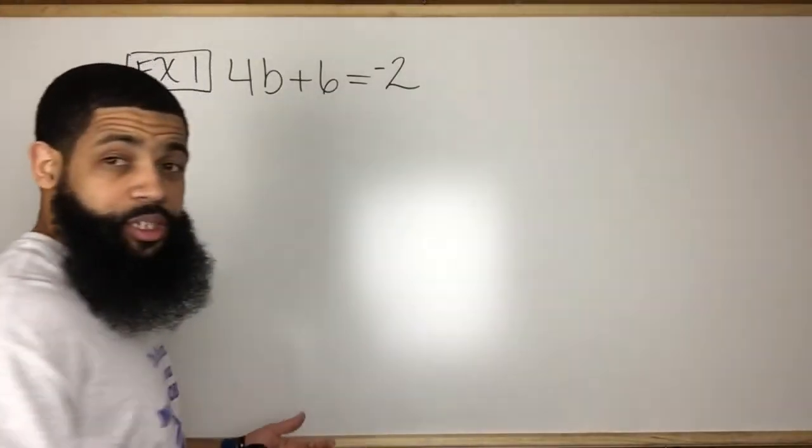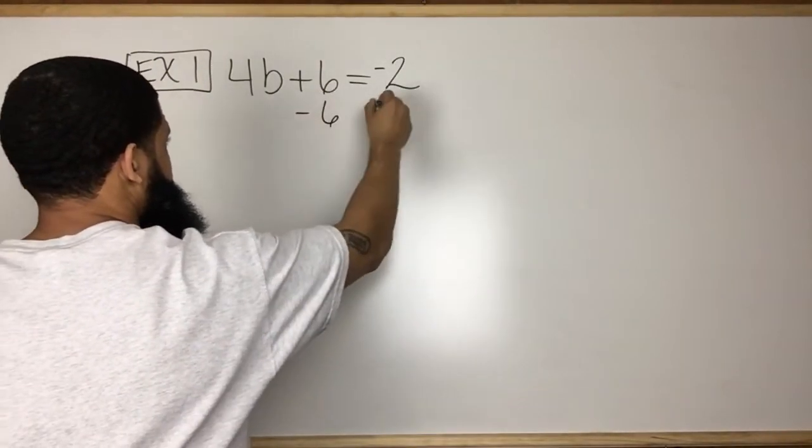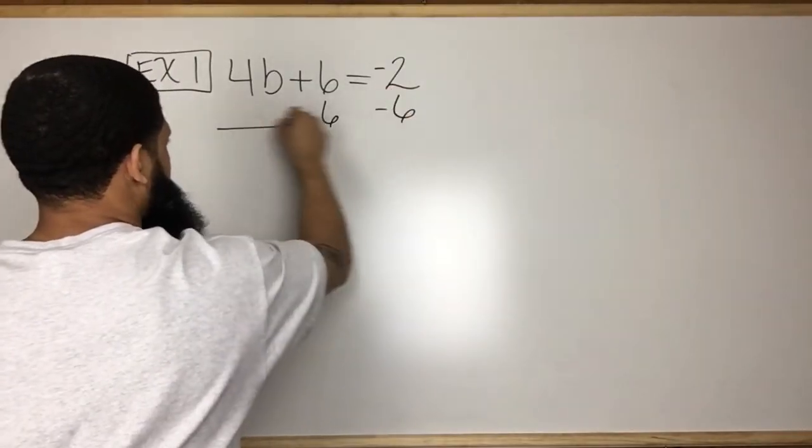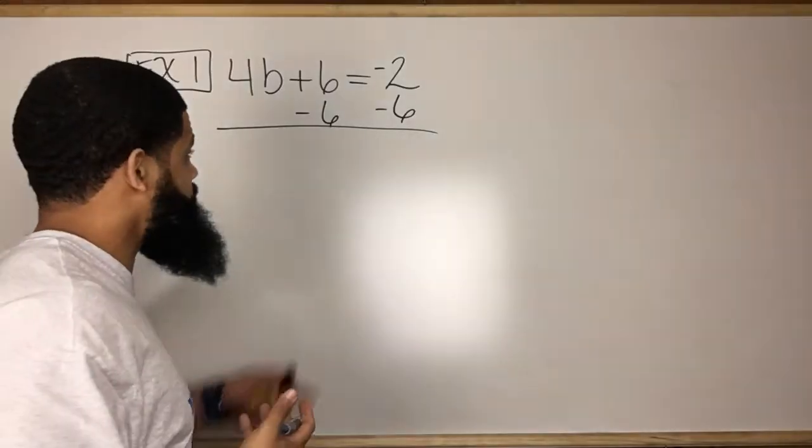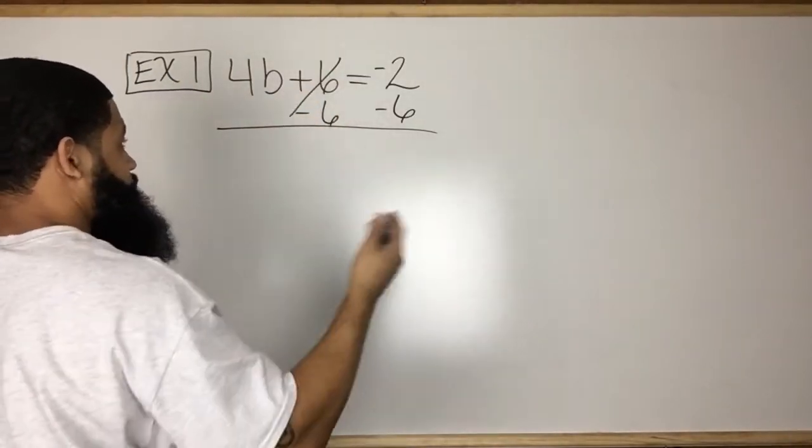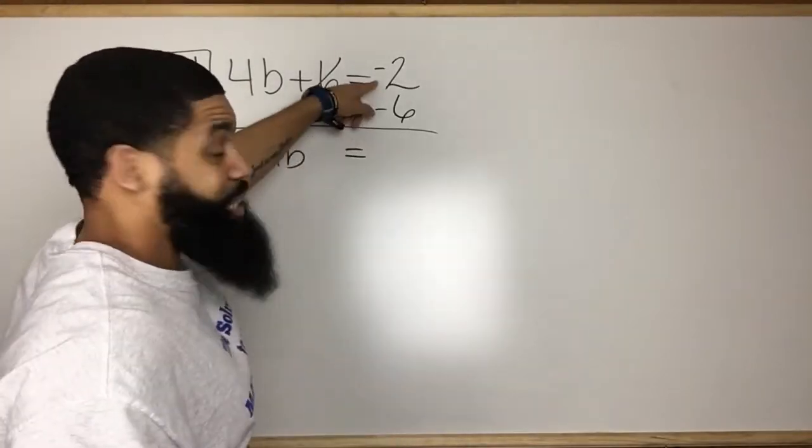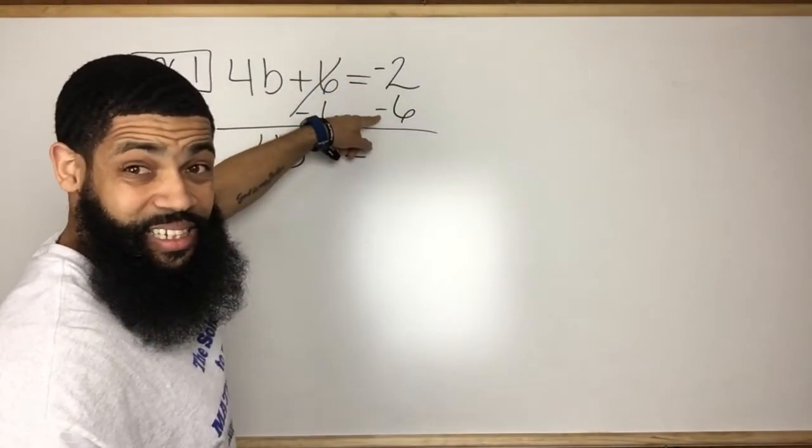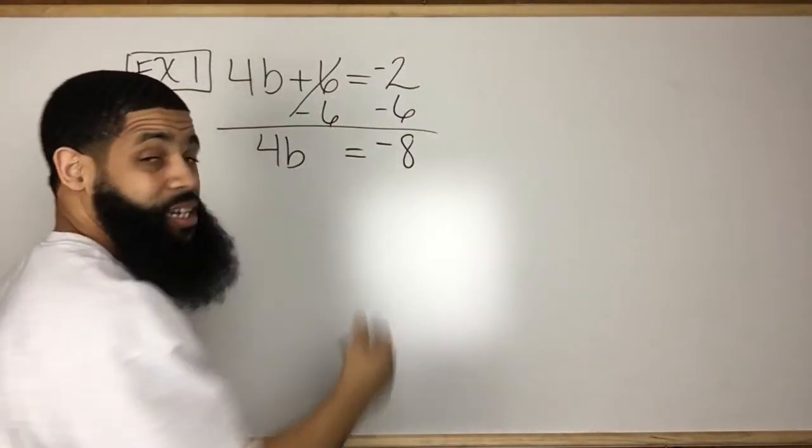So here I have plus 6. The opposite of adding 6 is subtracting 6. So I'm going to subtract 6 from both sides. You can write this horizontally or vertically. I prefer to do it vertically because I see that these two are opposites, so they cancel out. So I'm left with 4b on the left side equals negative 2 minus 6. That gives me negative 8. 4b equals negative 8.